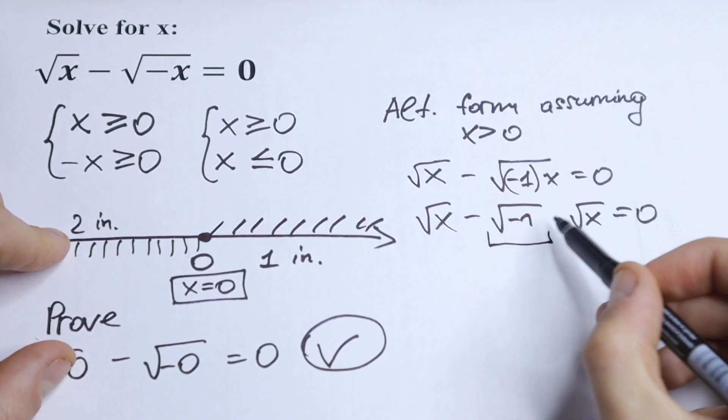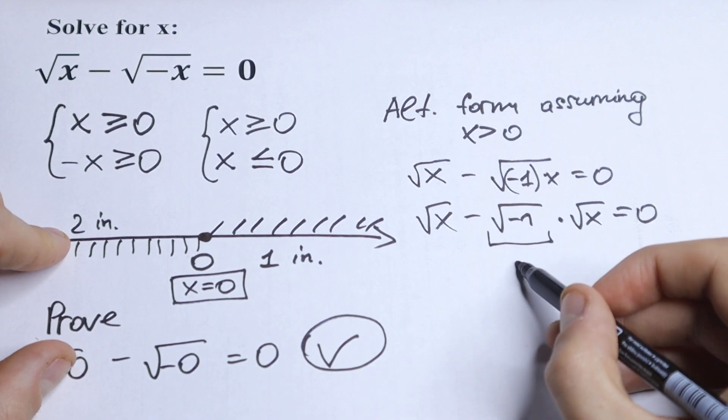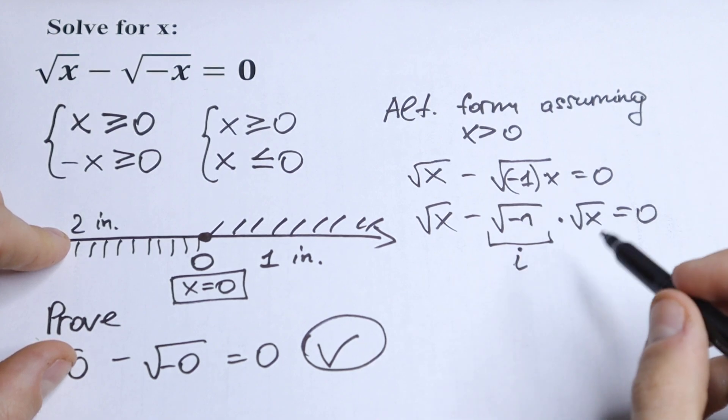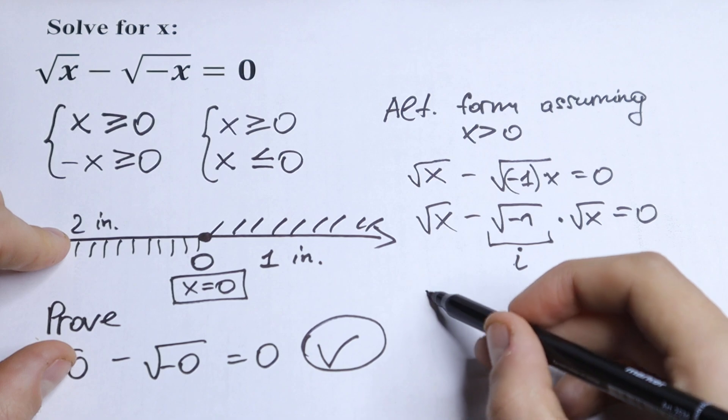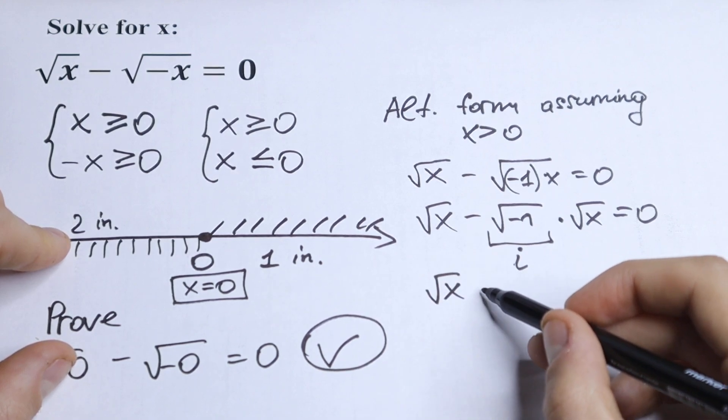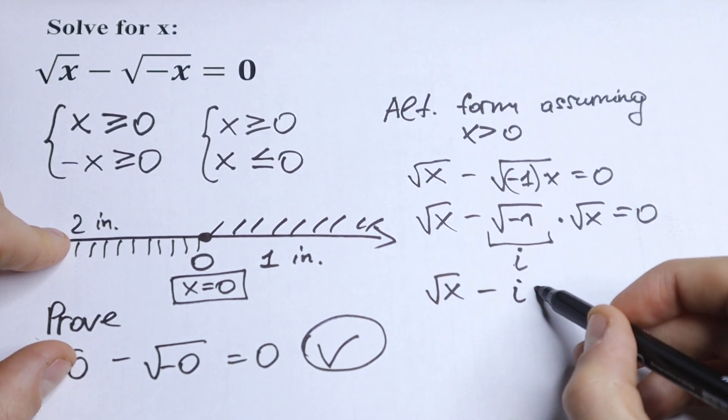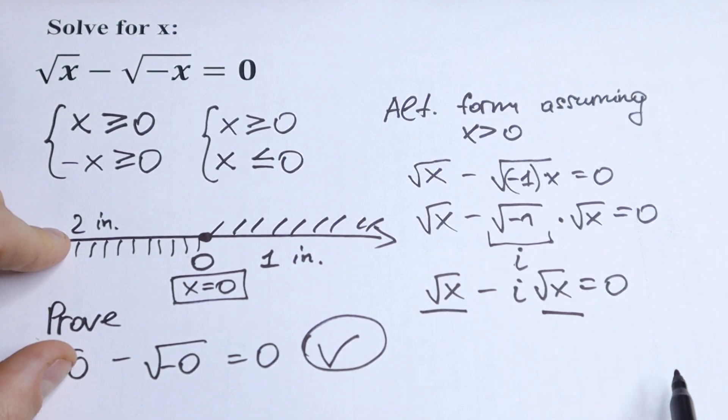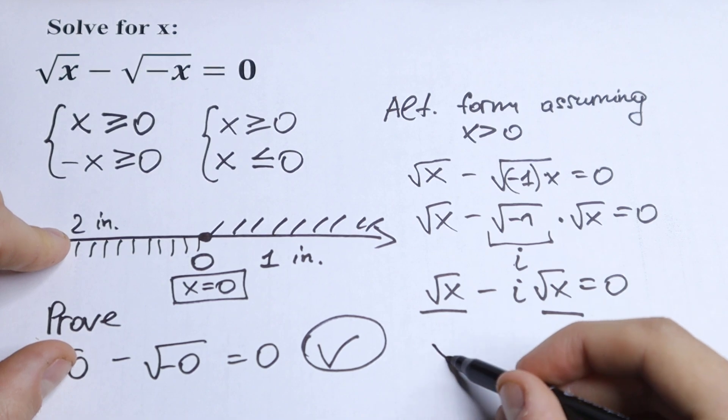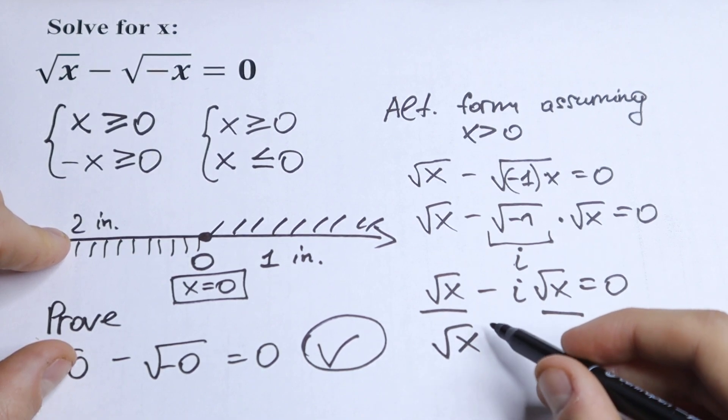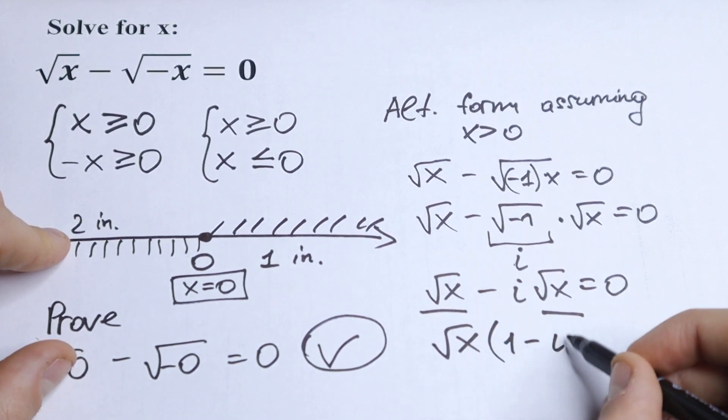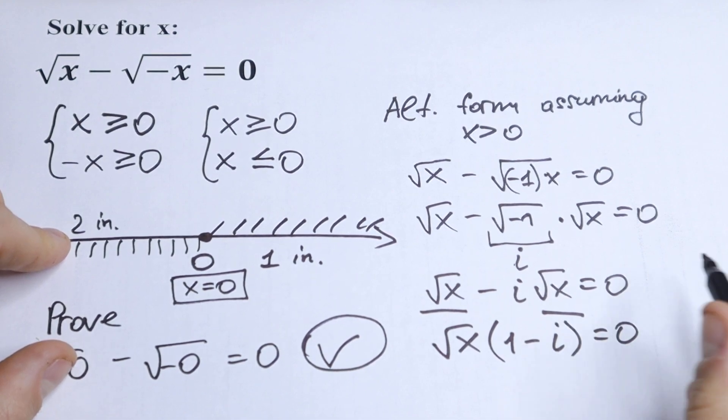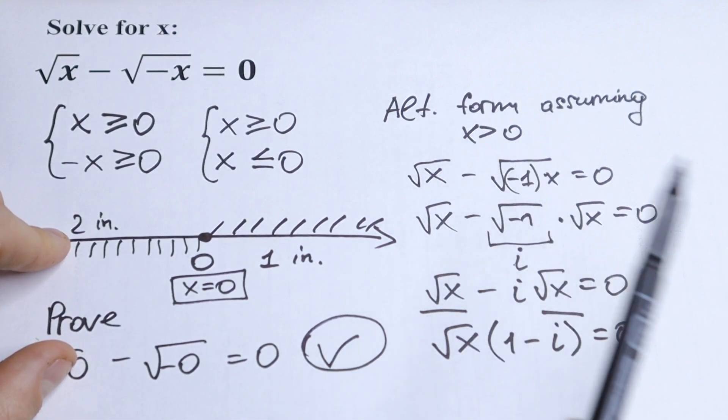We know that square root of minus 1 equal to i. So an interesting form right here. We can write it as square root of x minus i square root of x equal to 0. Square root of x and square root of x we can factor out as a common. So we will have square root of x and in parentheses we will have 1 minus i. This is an alternative form assuming x is greater than 0.